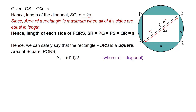The diagonal of the square is 2a. Substituting: area = (2a × 2a) / 2. The 2s cancel and the area of the square equals 2a².